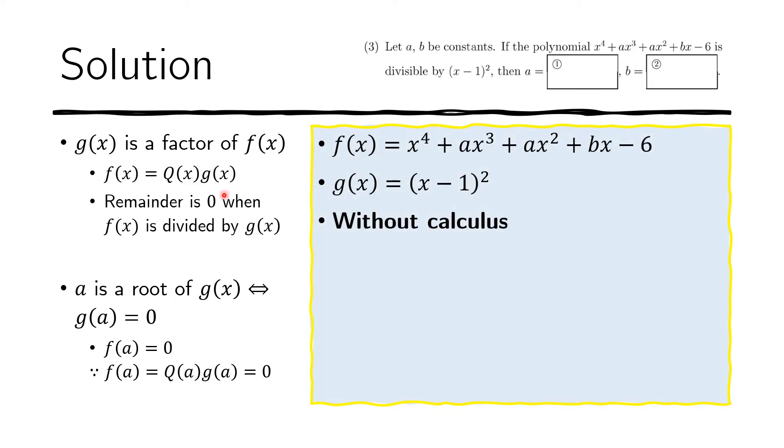The standard method without calculus uses this fact, that the remainder is zero when we divide f of x by g of x. That is, if g of x is a factor. So that's what we do. We just use this equation: zero equals the remainder when we do the division. Now, here, this one is just this given, and the denominator is just given. So we just expanded the denominator into this.